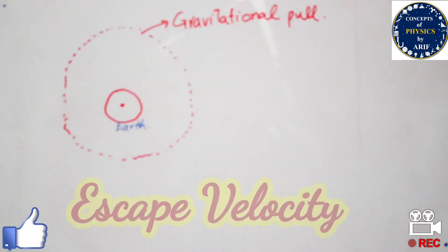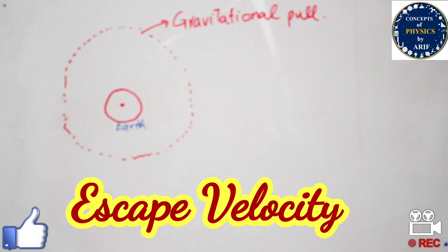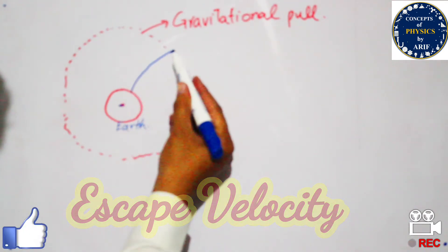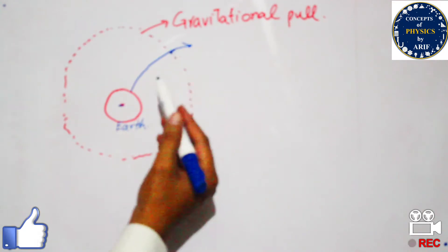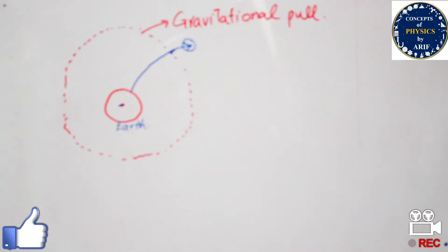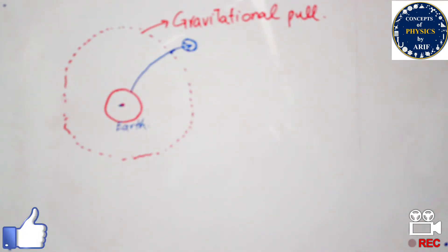Welcome to my YouTube channel. In this video we will discuss escape velocity. Escape velocity is the velocity of a body when it is away from the gravitational pull of the earth — when the body reaches a point in the atmosphere where there is no gravitational pull acting on it.